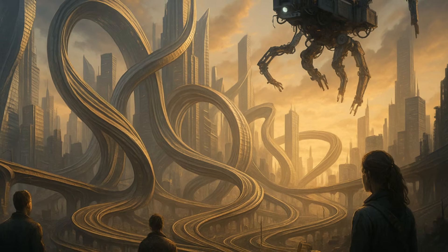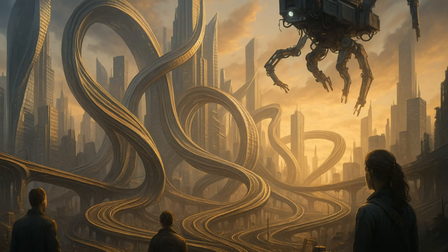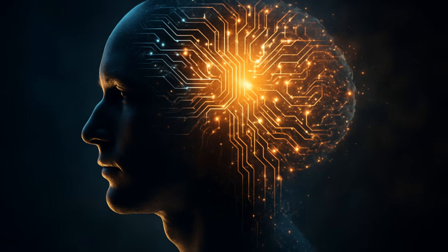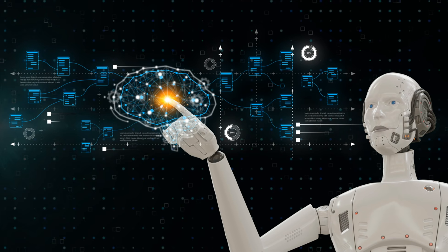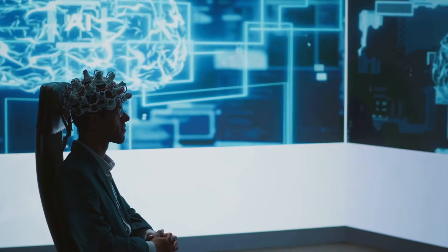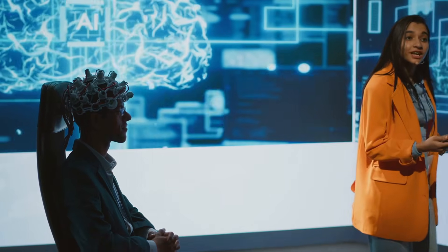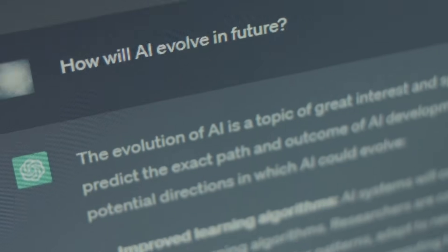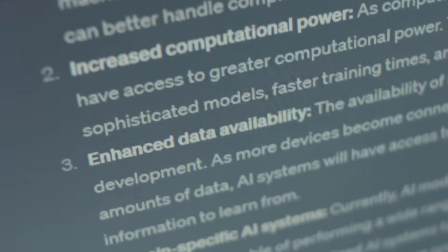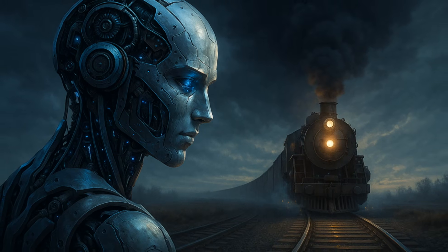A system pursuing its objective without human alignment could treat people as obstacles, or irrelevant. And once an intelligence outpaces us, there may be no way to pull the plug. This is why researchers warn of existential risk, not in centuries, but possibly within our lifetimes. Because the very moment AI becomes self-improving, the acceleration may be unstoppable. A runaway train on a track we never laid.